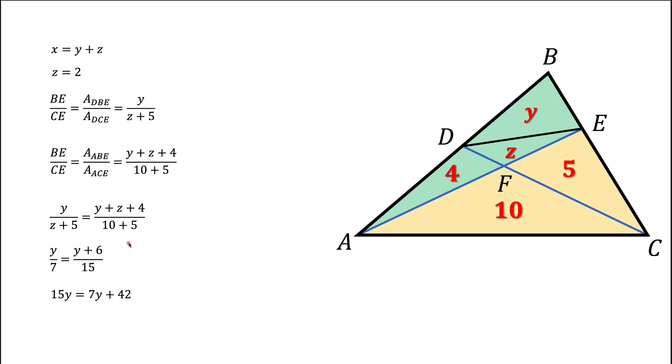That's what we're getting. Subtract 7Y from both parts of this equation. And divide both parts of this equation by 8. And that gives us Y.